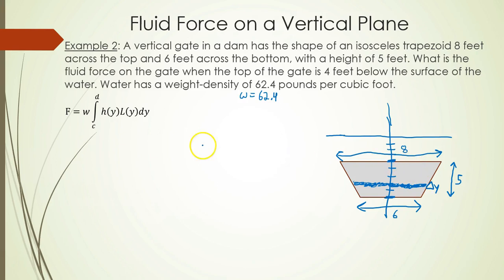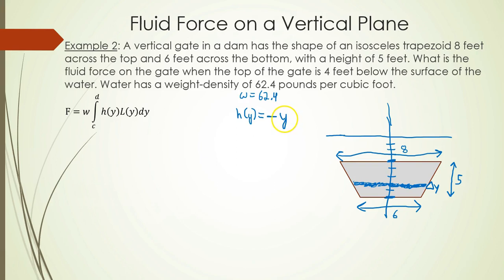We need to define h(y), the depth function. The depth h(y) is given by negative y. When the y-coordinate is negative four, plugging in gives negative times negative four equals positive four — meaning you're four feet below the water. When you plug in negative nine, you get nine, meaning you're at a depth of nine feet. So h(y) equals negative y.